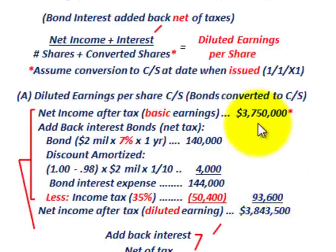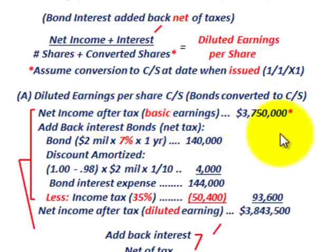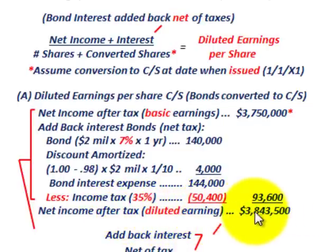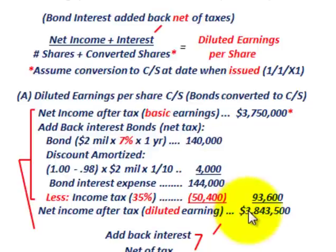We add that $93,600 back to our basic net income after tax of $3,750,000, giving us our diluted earnings numerator of $3,843,600. This backs out the interest expense on the bonds — since they were converted into common stock at the beginning of the year, we remove that after-tax interest cost.